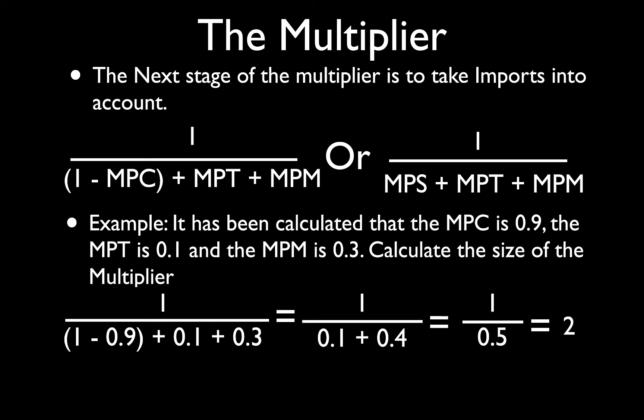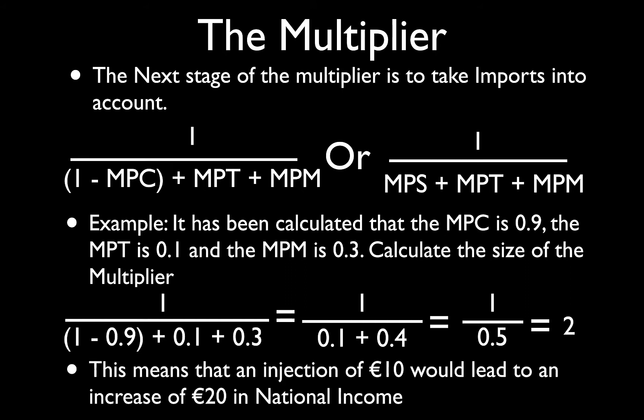Once you start to take into account these other leakages in terms of the marginal propensity to save, to tax, to import, then you find the multiplier gets a lot smaller. What's the economic meaning of the multiplier? If there's an initial injection into the economy of let's say 10 euro, national income would rise by twice that injection which is 20 euro. The relationship between an initial injection into the circular flow of income and the resultant increase in national income.